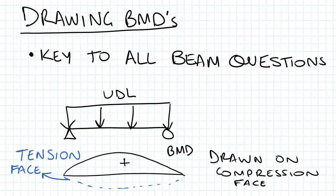Just with respect to all beam questions, the key to them really is drawing the BMDs — I cannot stress this enough. So when you're given any forces or UDLs on any sort of beam, you should be able to draw them. What I've drawn here is a BMD for this UDL, which is simply supported, and it is drawn on the compression face, shown in this black line here, and the dash line shows if it was drawn on the tension face. Most commonly in steel, we draw on the compression face, but it's sort of a bit of personal choice.